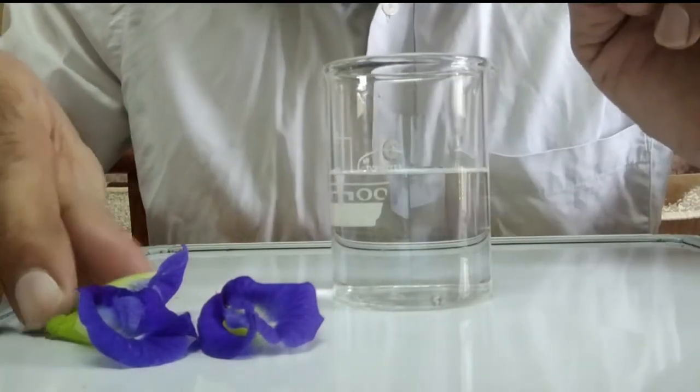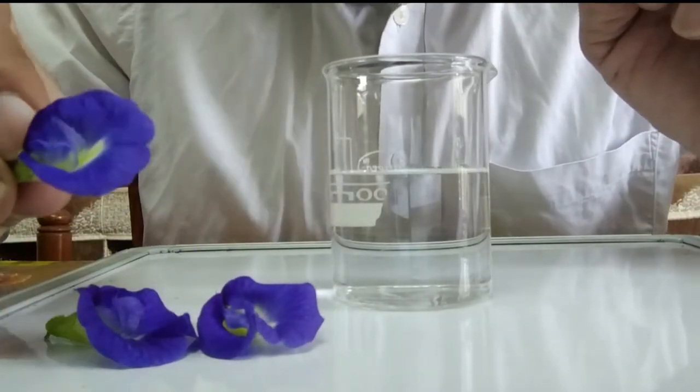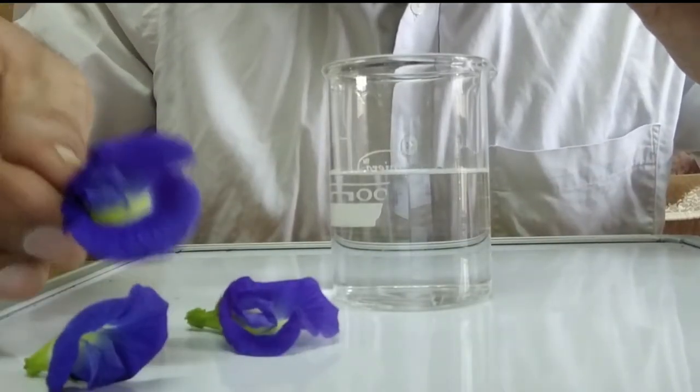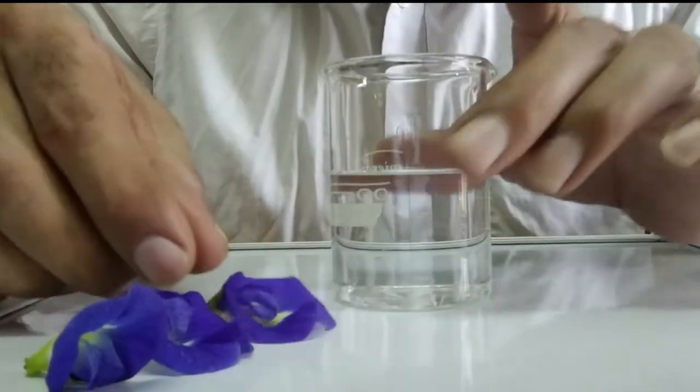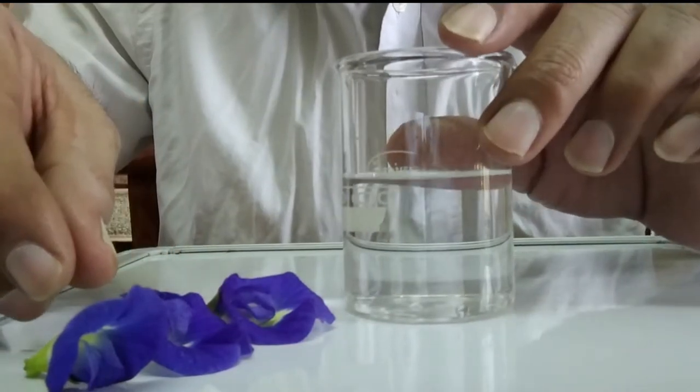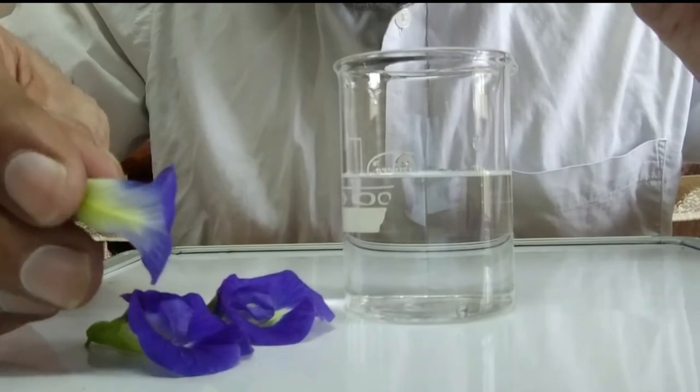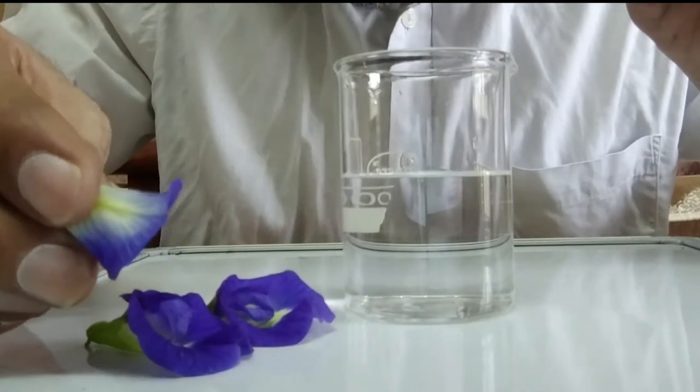Hello friends, these are three flowers of clitoria ternacea and this is about 60 ml of water. Firstly, I am going to prepare water extract of these flowers. Let's start.